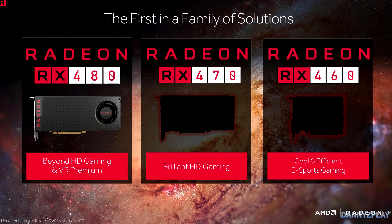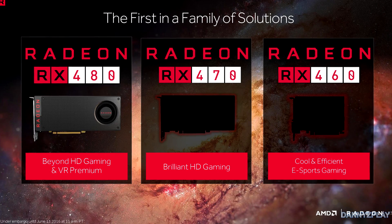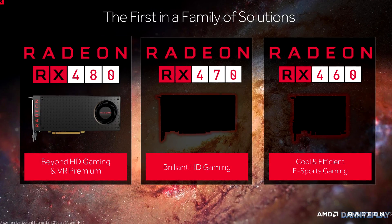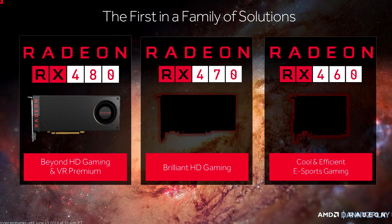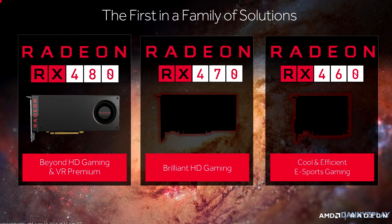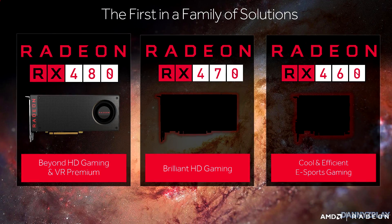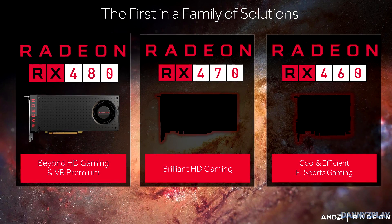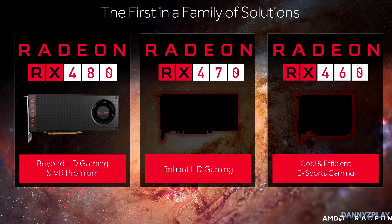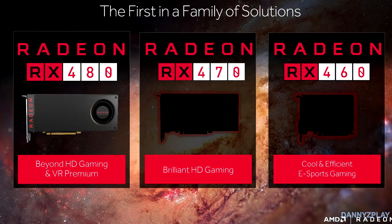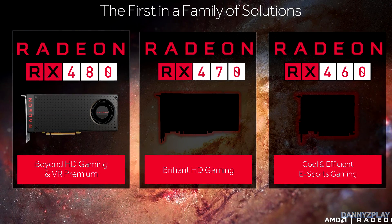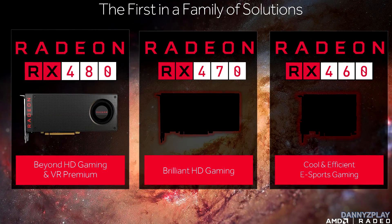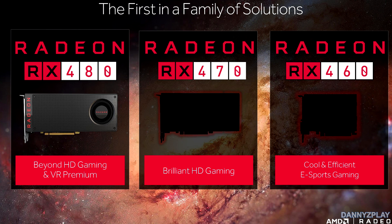Now that you've seen the rest of the benchmarks, you can easily observe that across all the titles, the performance of the RX 470 is surprisingly close to the RX 480. The results we saw from the specification tables translated pretty much directly over to performance in games. In some games there was a difference of 5 fps, and in some the difference was as small as just 2 fps.